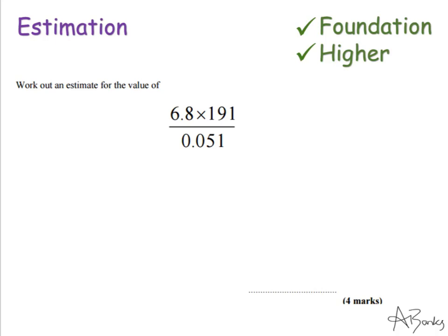When I do an estimation question, I'm going to round every single number in the calculation to one significant figure — rather than rounding to the nearest whole number or to the nearest hundred. Because if you look at a number like the one I have at the bottom here, if I round that to the nearest whole number, I actually get zero, and I can't divide anything by zero. So we have to be consistent and round everything to one significant figure.